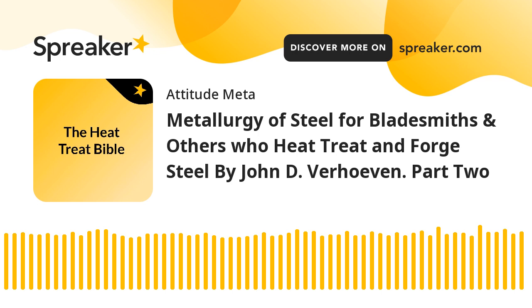This leads to a different solid structure for cast iron — iron with total percent C greater than 2.1 percent — which is discussed in more detail in Chapter 16.